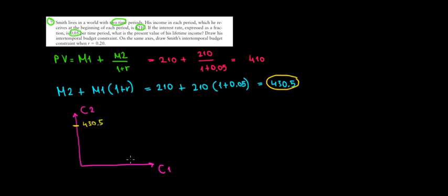And how much can we consume in the first period? If we spend nothing in the second period, if we literally spend all our money now, we would be able to spend $410. So another intercept would be $410.